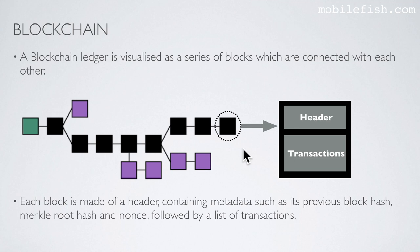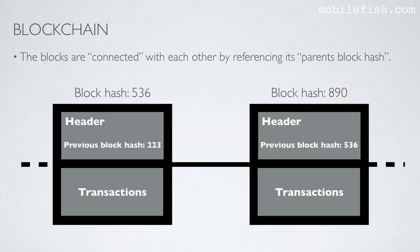In this example, this block has a header and a list of transactions. The header contains a previous block hash, a Merkle root hash and a nonce. The blocks are connected with each other by referencing its parent's block hash.